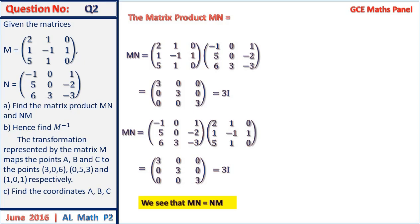Do not make the mistake to say that matrix M and N are inverses. That is not correct because MN is equal to 3 times I. Similarly, NM is 3I.